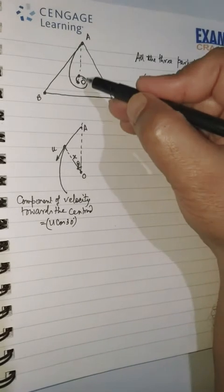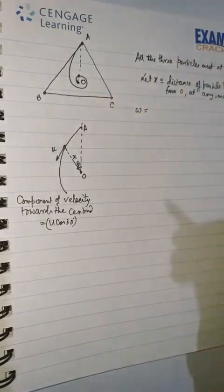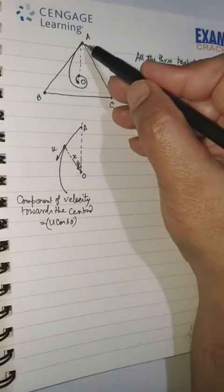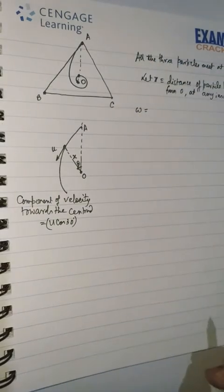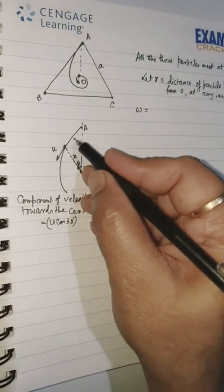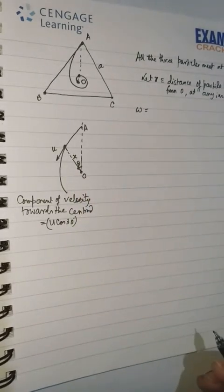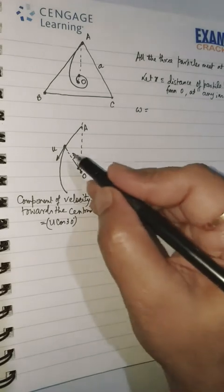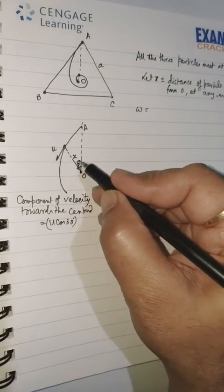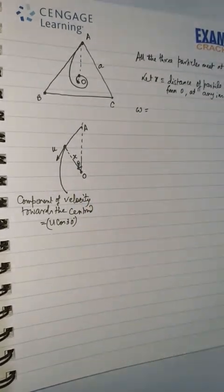And what will be the initial distance? This initial distance—you know that the distance between the vertex and the centroid is A/√3, where each side is A. So this U, which is tangential at that moment, has U cos 30° towards O and U sin 30° perpendicular to this line joining.